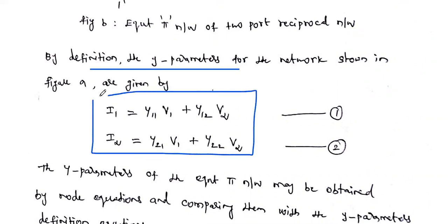As per the Y-parameter equations: I1 = Y11·V1 + Y12·V2, and I2 = Y21·V1 + Y22·V2. These two equations are called the Y-parameter equations.